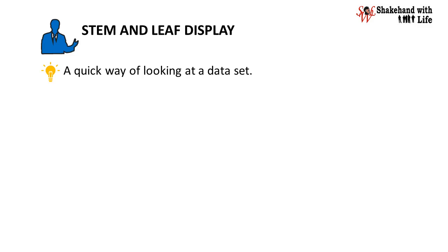A stem and leaf display is a quick way of looking at a data set. It contains some of the features of a histogram but avoids the loss of information in a histogram that results from aggregating the data into intervals.